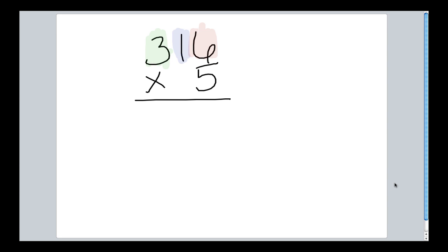Let's start by multiplying our hundreds. Let's take 300 and multiply it by 5. That's going to give us 1500.